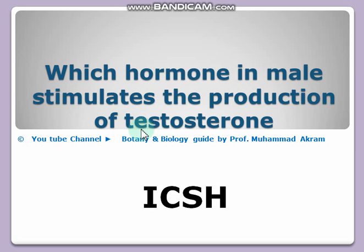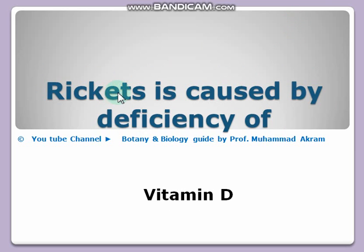Which hormone in males stimulates the production of testosterone? ICSH is a hormone in males which stimulates the production of testosterone. Rickets is a disease caused by the deficiency of vitamin D.